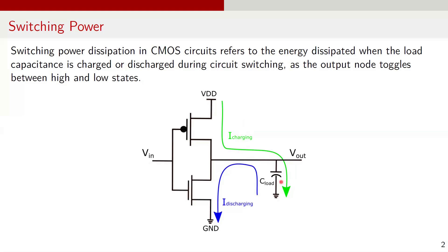The power supply voltages are VDD and ground. The capacitive load at the output node Vout is denoted as C_load. When the input toggles from 1 to 0, a current flows from the power supply VDD through the PMOS transistor, charging the capacitive load. Conversely, when the input toggles from 0 to 1, the charge stored in the capacitor discharges through the current flowing from the capacitor through the NMOS transistor to ground.